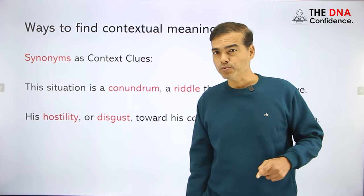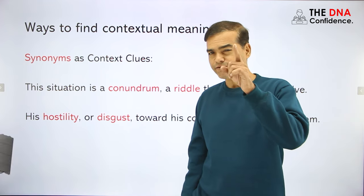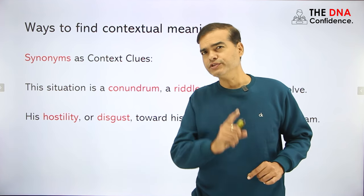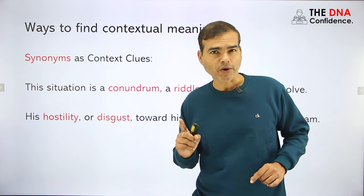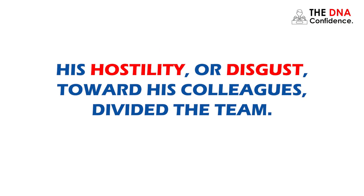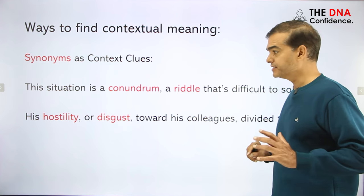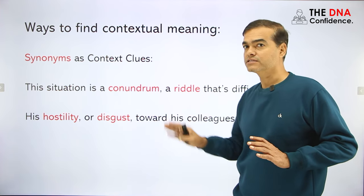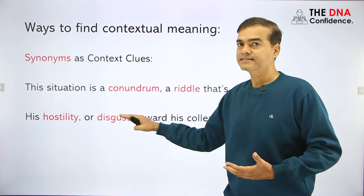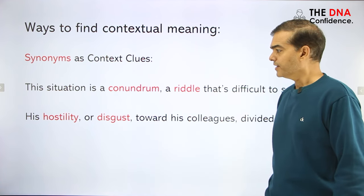Before moving forward, I'm going to give a homework assignment at the end — you have to write the answers in the comments. Now, another synonym example: 'His hostility, or disgust, toward his colleagues divided the team.' The synonym 'disgust' is given — it means you don't like that person. So hostility means disgust. That's how synonyms work as contextual clues.